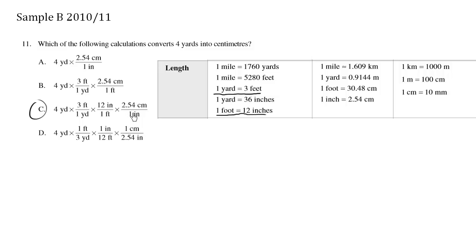And to have inches cancel out to get centimeters, which is what we want, we have 2.54 centimeters per inch, which is right over here. So this one here is correct, choice C.